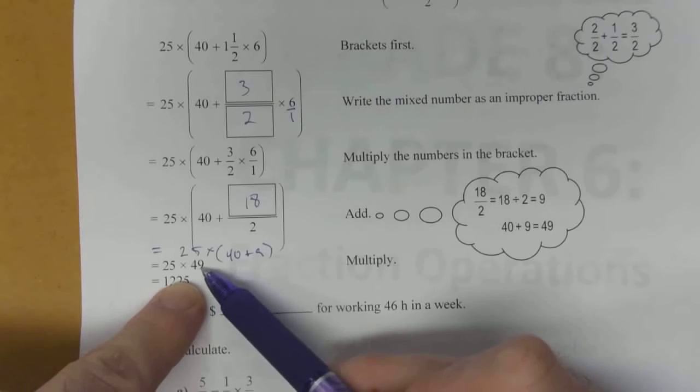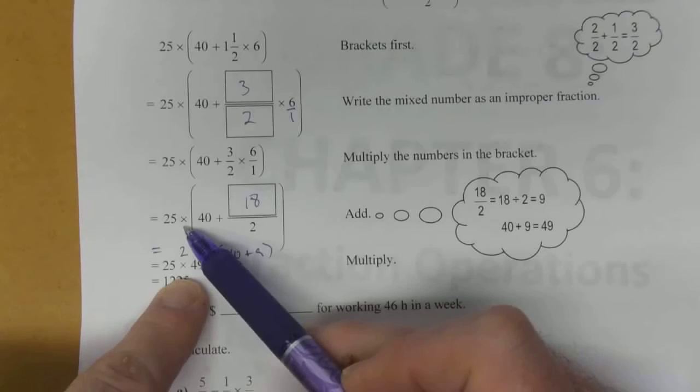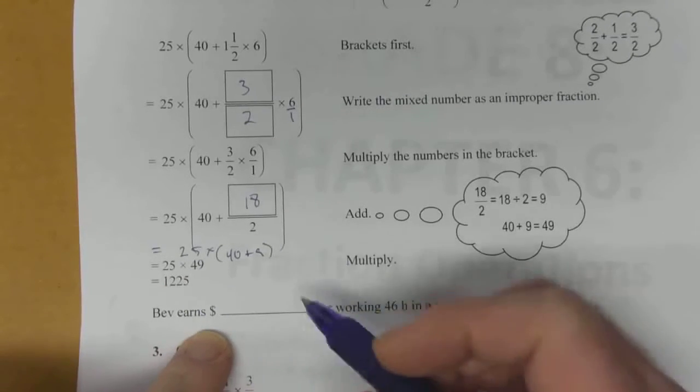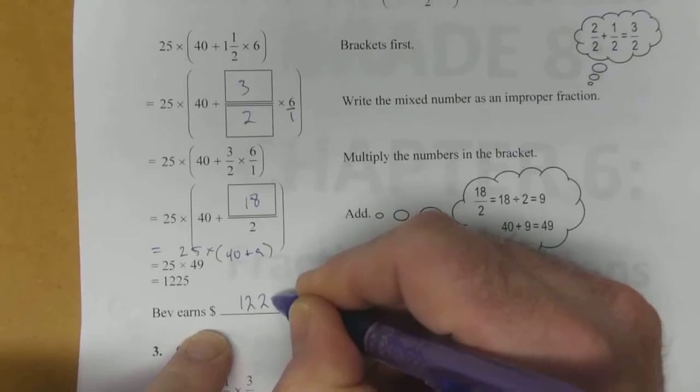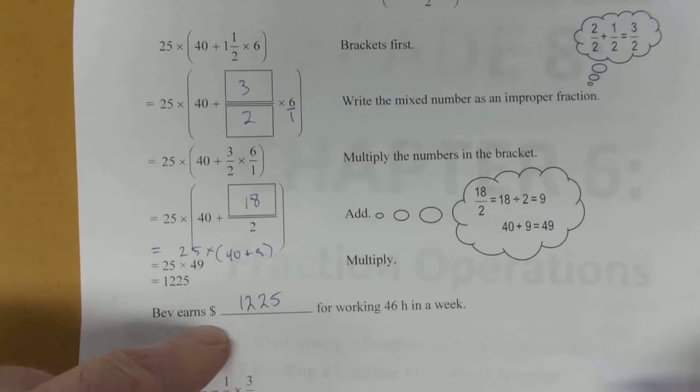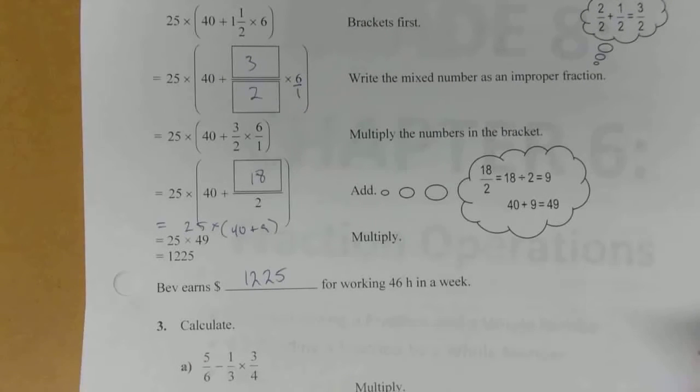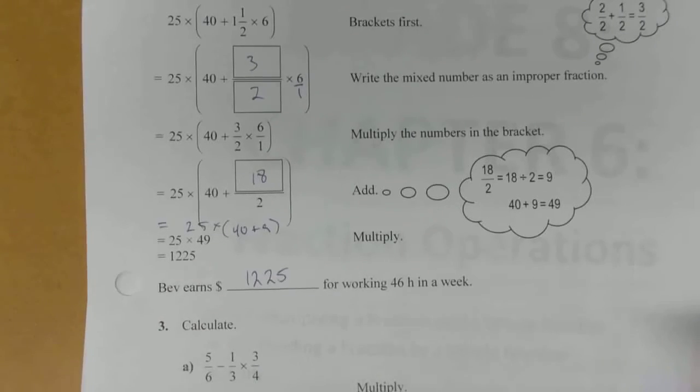We've simplified the brackets now to become 49. So now we can do the last operation, the multiply. So 25 times 49 will give you 1225. So depending on how your brain works, you can use either of these methods. And you should be successful with either one. You get the same answer in both cases.